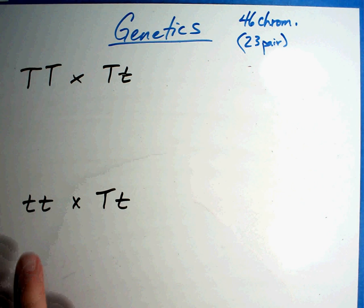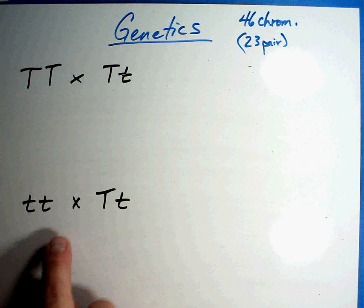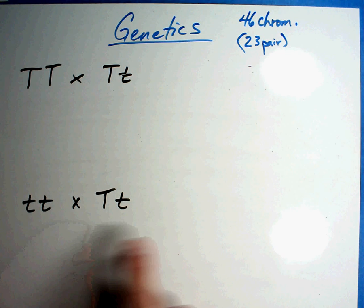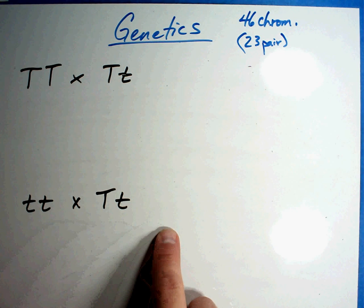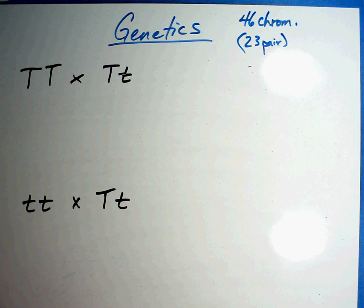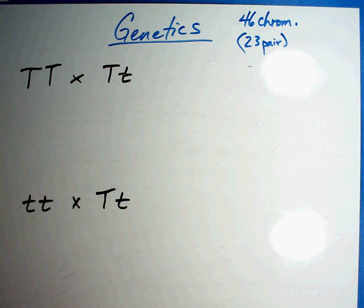Then I want you to do this second Punnett square and do the same thing — phenotype and genotype. If you're not sure how to do it, go back and look at your notes, but see what you get. Go ahead and pause the video. We'll come back in a second and work it together.